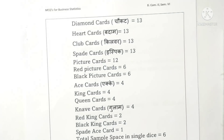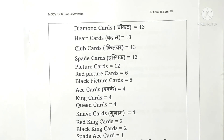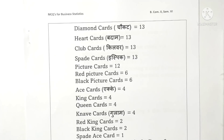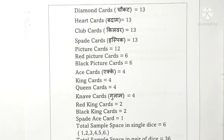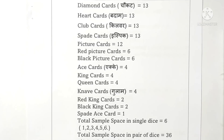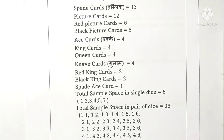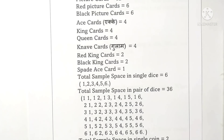Monthly days: January 31, February non-leap year 28, February leap year 29, March 31, April 30, May 31, June 30, July 31, August 31, September 30. Total cards in a playing pack: 52. Red cards: 26. Black cards: 26. Diamond cards: 13. Heart cards: 13. Club cards: 13. Spade cards: 13. Picture cards: 12. Red pictures: 6. Black pictures: 6.